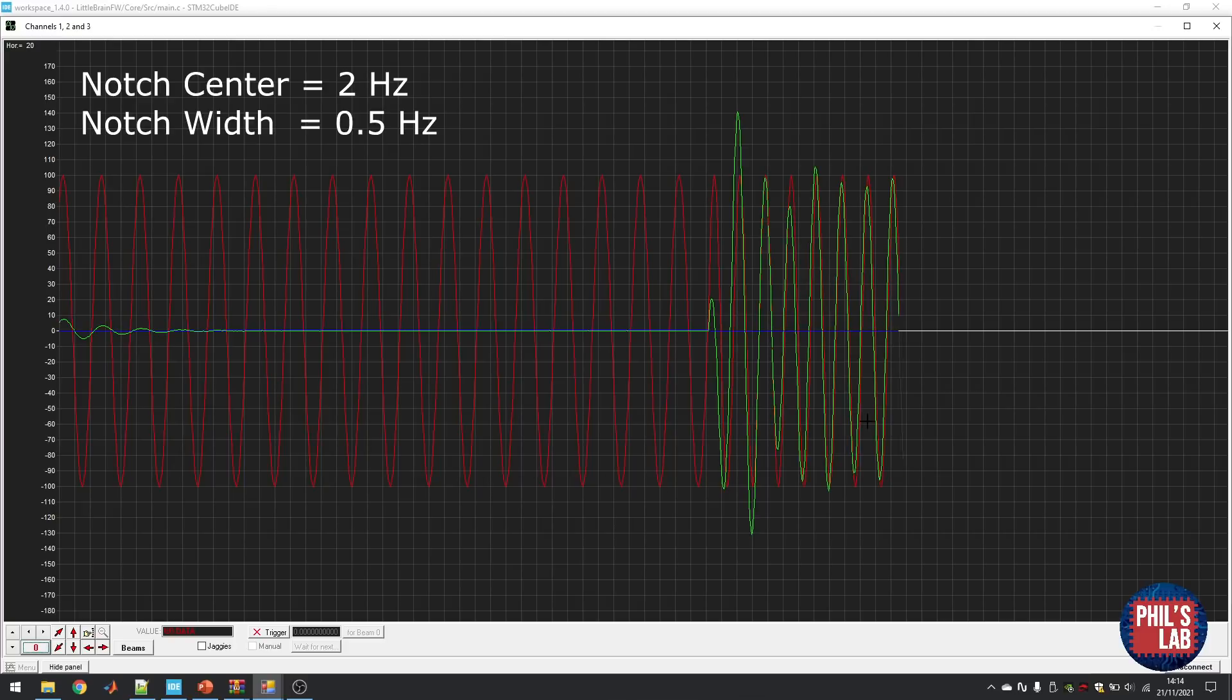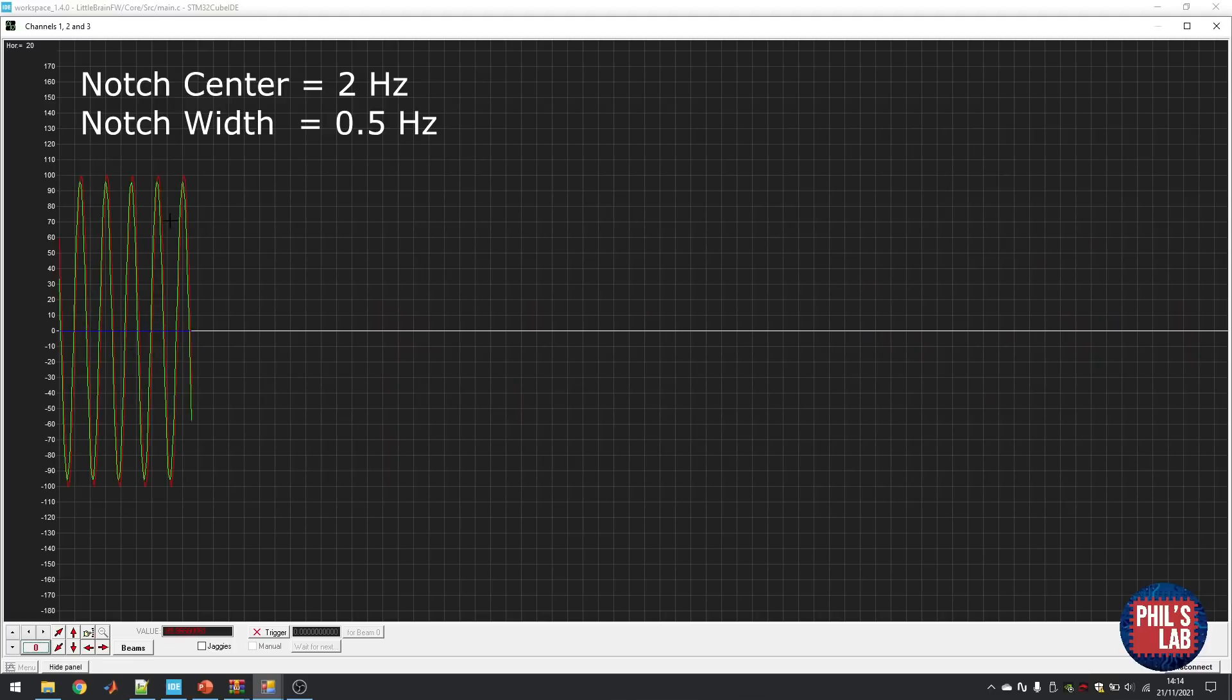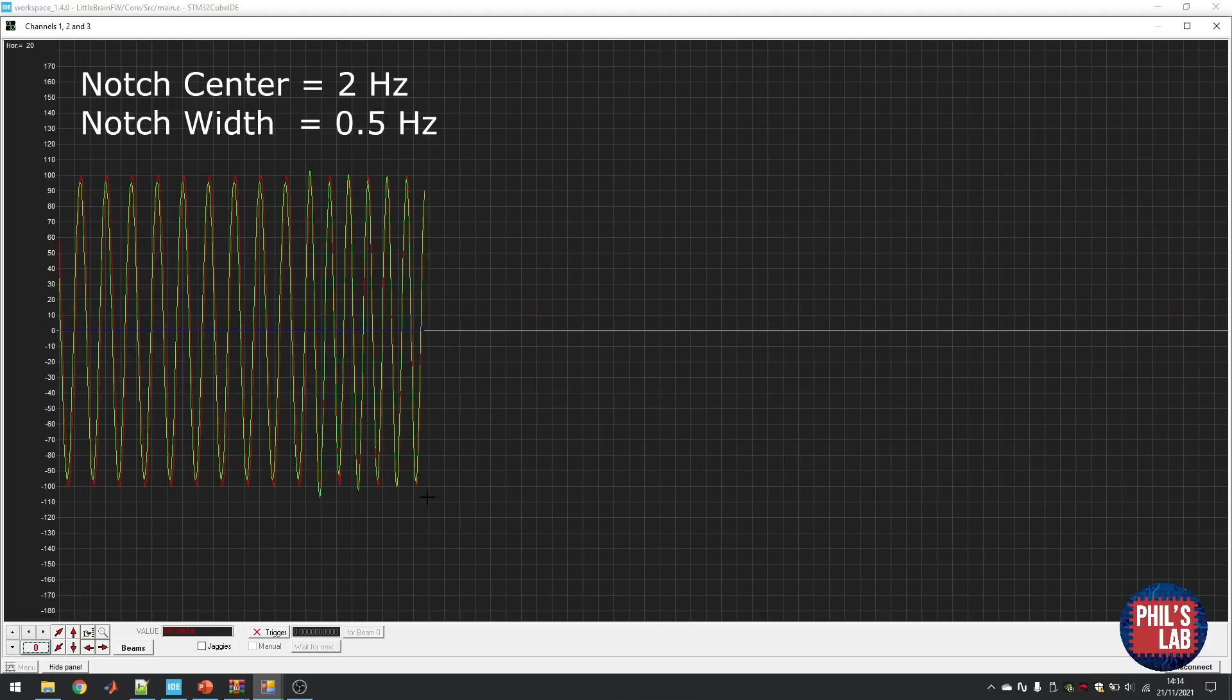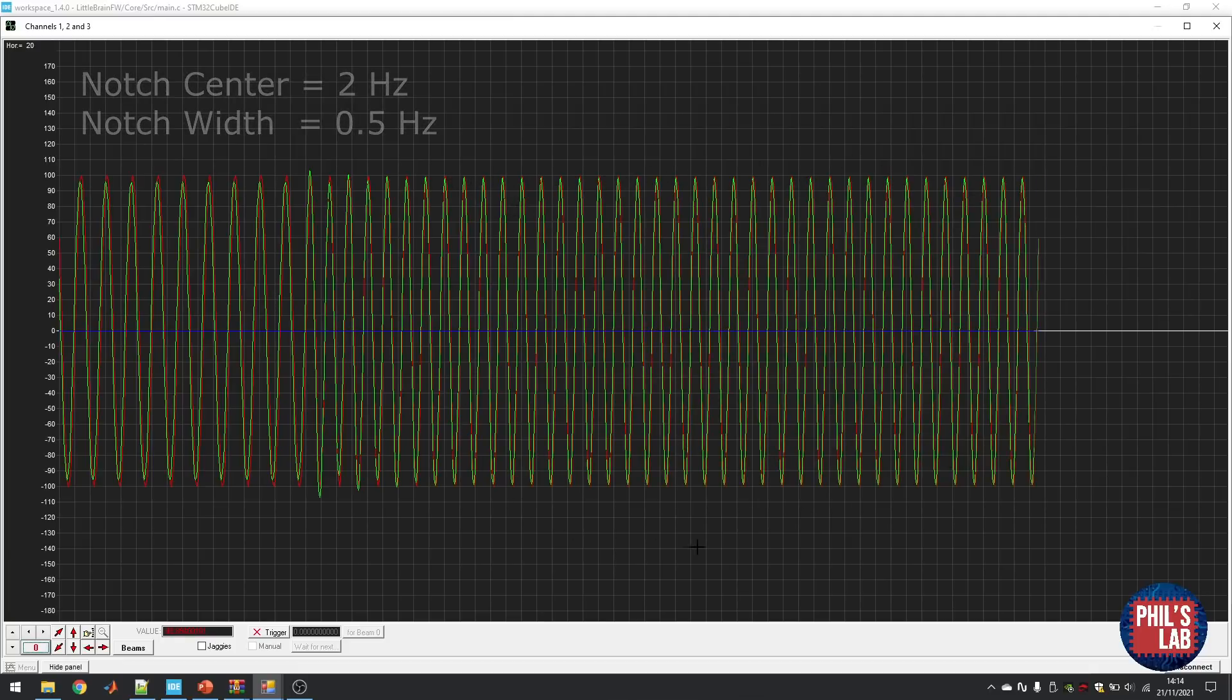Then moving to three hertz, we can see we are still in the notch width, which means we have a slight bit of attenuation still. But again, the notch is very narrow, so three hertz gets passed quite nicely. Now we're at four hertz, and you can see we're pretty much outside of the notch, and we get no attenuation and no phase shift as we predicted with our model.